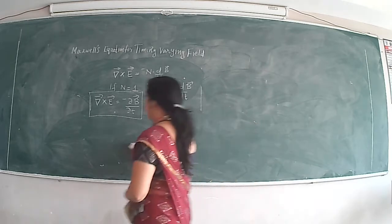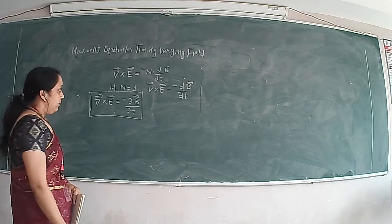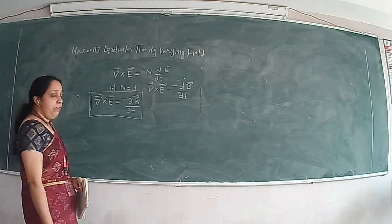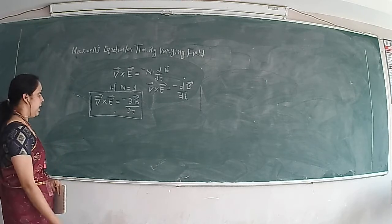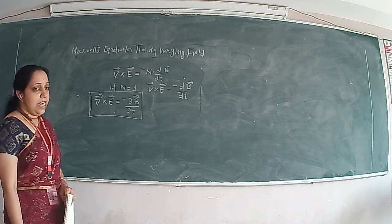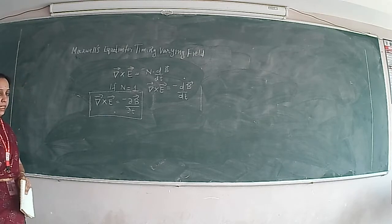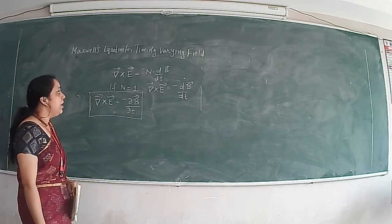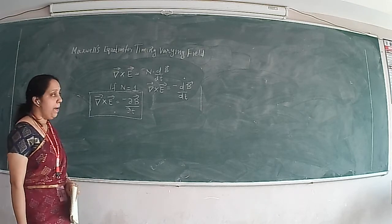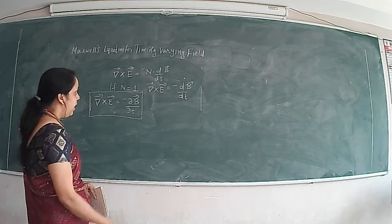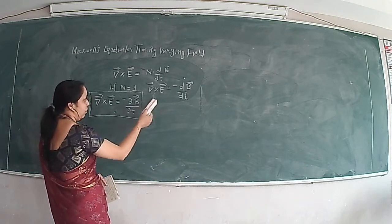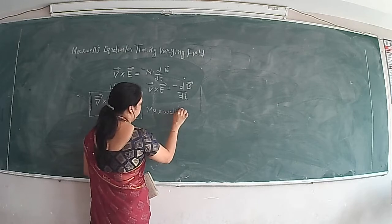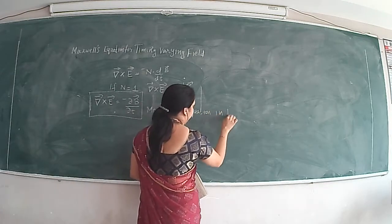Once again, Maxwell's equation for time varying field: time varying field induces a voltage and hence it produces a current flow through a closed circuit. We use Faraday's equation to derive Maxwell's equation. As per Faraday's law, whenever the conductor cuts the magnetic flux, EMF will be induced, and the induced EMF is proportional to the rate of change of flux linkage. Flux linkage is replaced with N·phi. The minus sign is related to Lenz's law. If the number of turns N is equal to 1, then curl E equals minus dB/dt. This equation represents Maxwell's equation in time varying field.